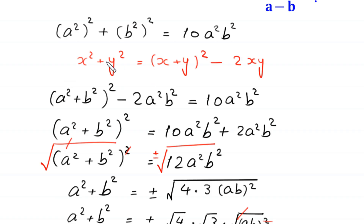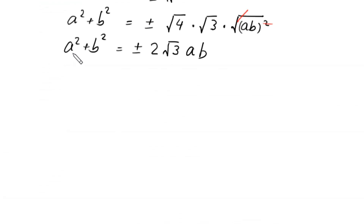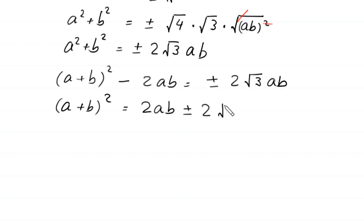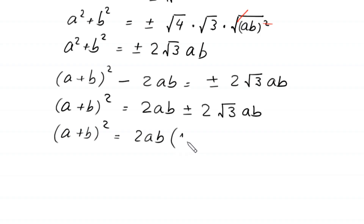Again by using the algebraic identity, a squared plus b squared becomes (a plus b) whole squared minus 2ab, equal to plus or minus 2 root 3 times ab. Moving the negative 2ab to the right hand side, (a plus b) whole squared equals 2ab plus or minus 2 root 3 times ab, which factors as 2ab times (1 plus or minus root 3). We call this Equation 1.